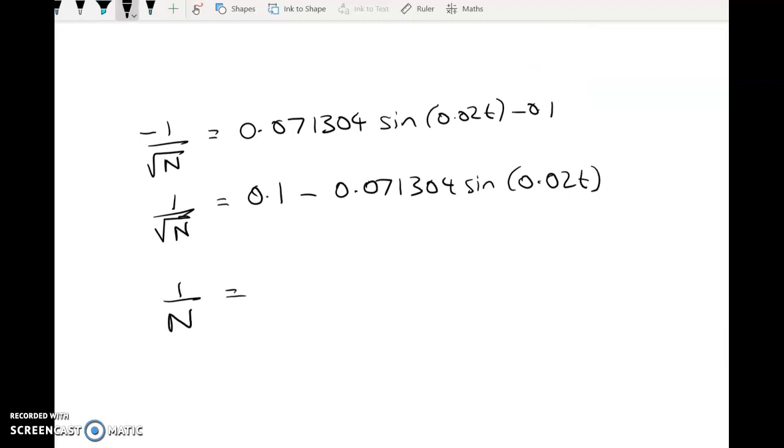And now I need to get an expression for N. I'm going to square both sides. And now I'll take the reciprocal. So N equals 1 over all of that. And that's the next couple of marks in the question.